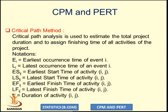To draw a network diagram is an entry point for the Critical Path Method. If we cannot identify all the activities in the network diagram, we cannot correctly find the critical path. Critical path analysis is used to estimate total project duration and to assign finishing times to all activities. In CPM, we use the following notations: EI is the earliest occurrence time of event I; LI is the latest occurrence time of event I; ESIJ is the earliest start time of activity IJ; LSIJ is the latest start time of activity IJ; EFIJ is the earliest finish time; LFIJ is the latest finish time; and TIJ is the duration of activity IJ.